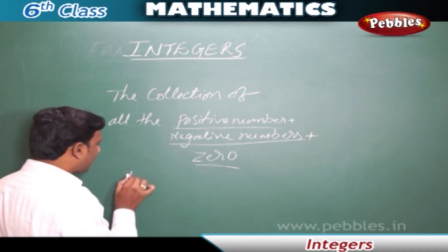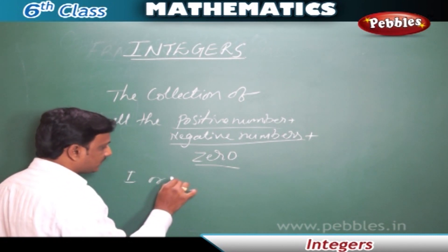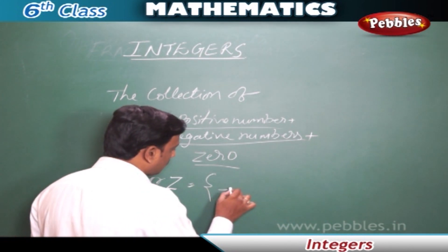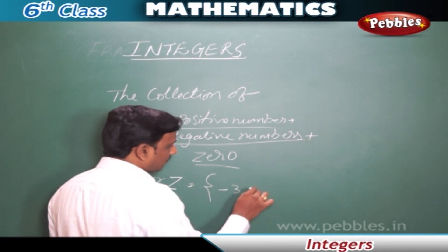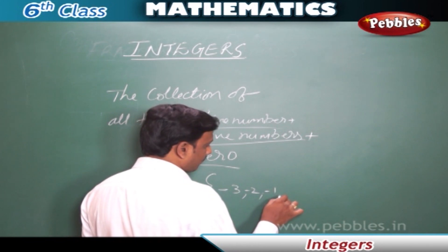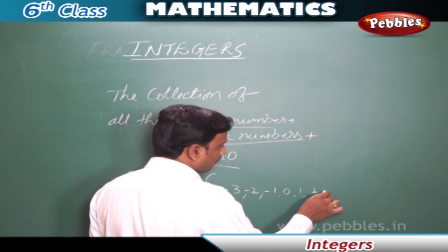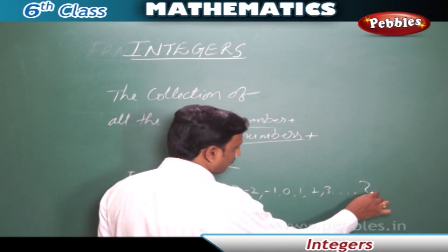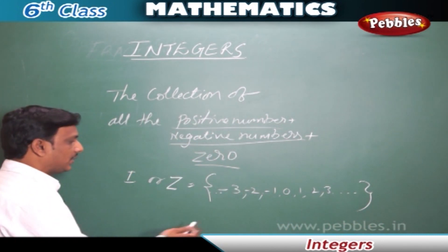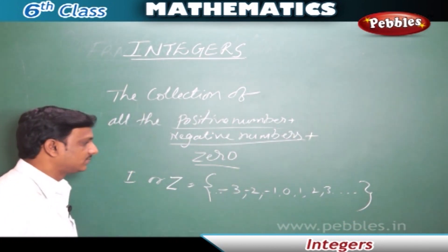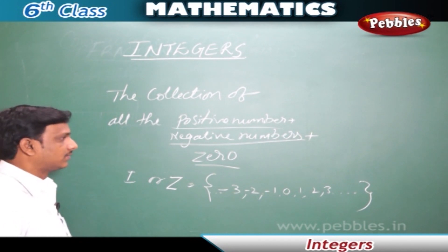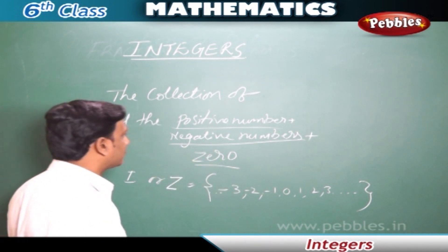Integers are denoted by the letter I or Z. Now, let us learn what negative numbers are.